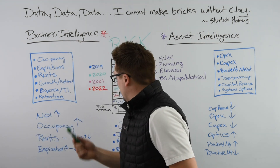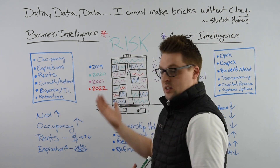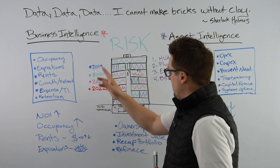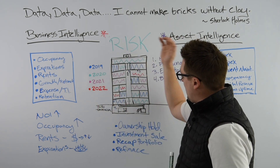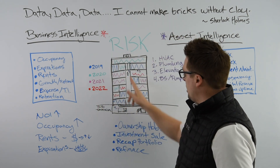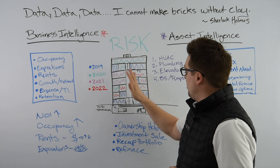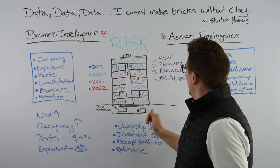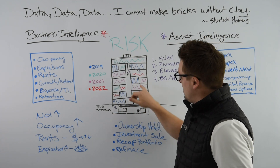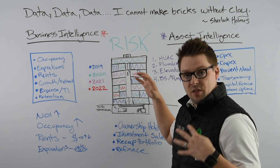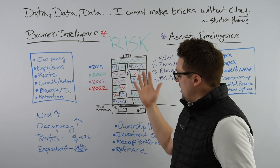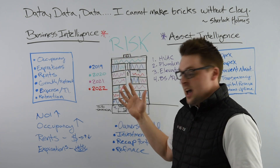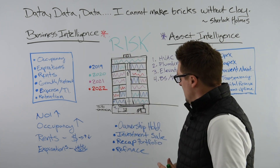Looking back at this building, you can see how all the systems lay out. You've got your tenancy in here, your HVAC on the roof, your elevators, your plumbing, your building systems, sprinklers, and other things coming into play. All of these things make up the ultimate DNA of a property.